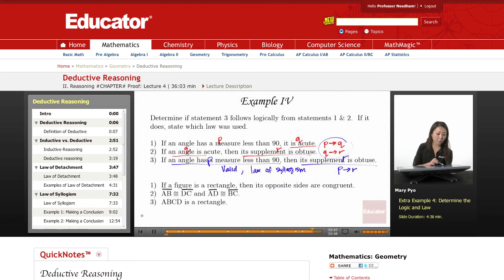And the next example, if a figure is a rectangle, then its opposite sides are congruent. If I have a rectangle, its opposite sides are congruent. Okay, so this is congruent to here, and this is congruent to here. AB is congruent to DC. So if I have A, B, C, D, AB is congruent to DC, and AD is congruent to BC.